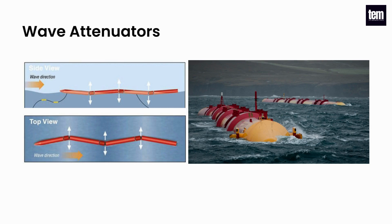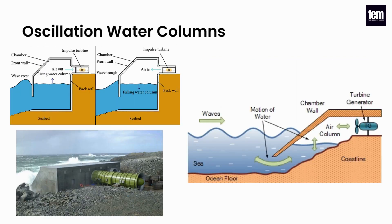Wave attenuators generally have multiple segments connected to one another and are oriented parallel with incoming waves. They use the rise and fall of swells to create a flexing motion that may be converted into rotation or drive hydraulic pumps to generate electricity. Oscillating water columns are a partially submerged closed structure where the upper part, above the water, is filled with air and incoming waves are funneled into the bottom. The waves cause the water column to rise and fall, which causes the air in the top structure to pressurize and depressurize, pushing and pulling air through a connected air turbine at the top, converting the energy into electricity.